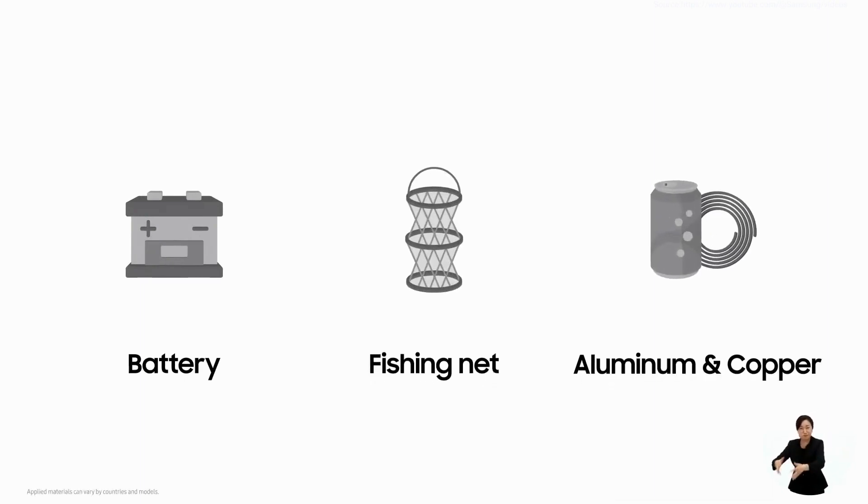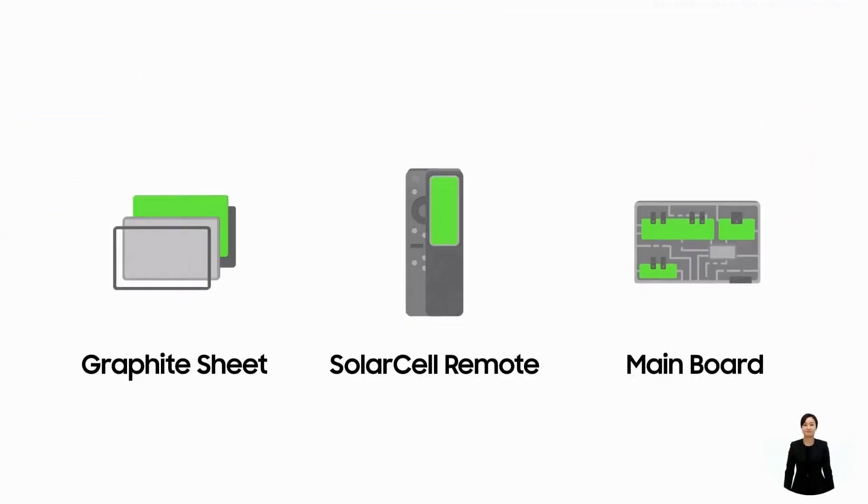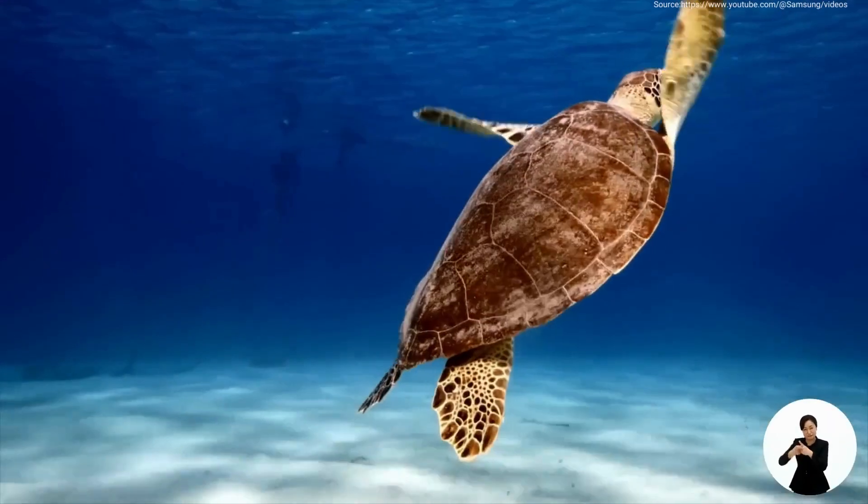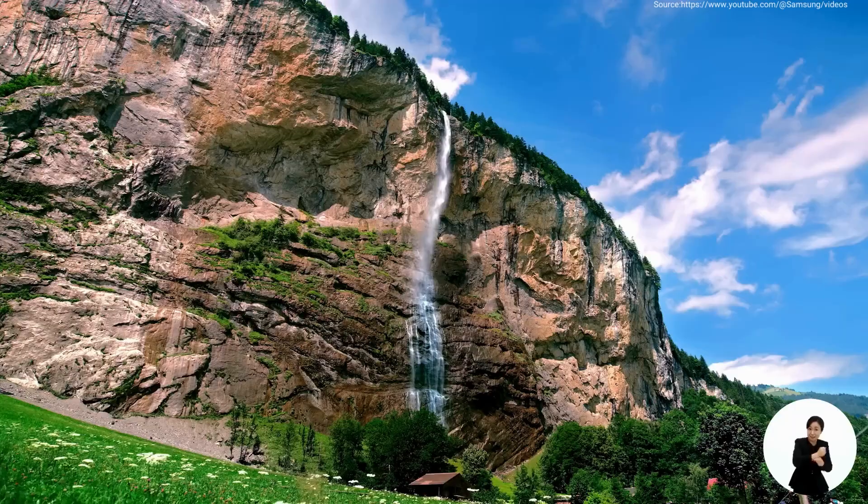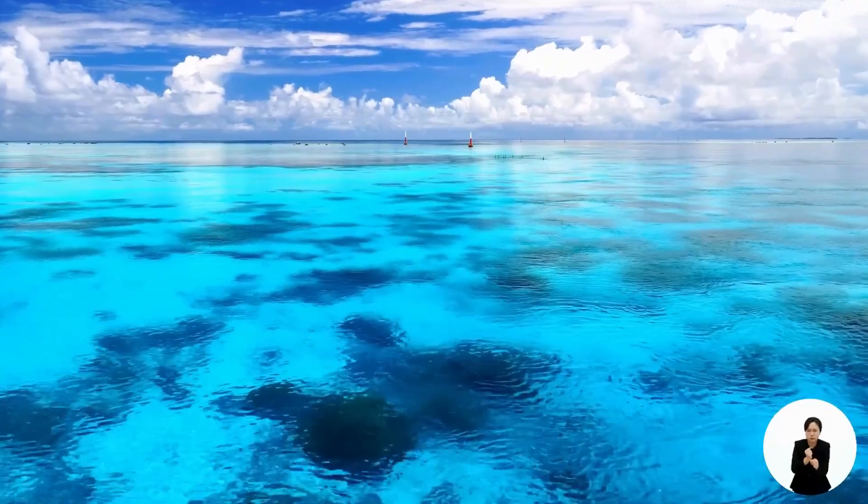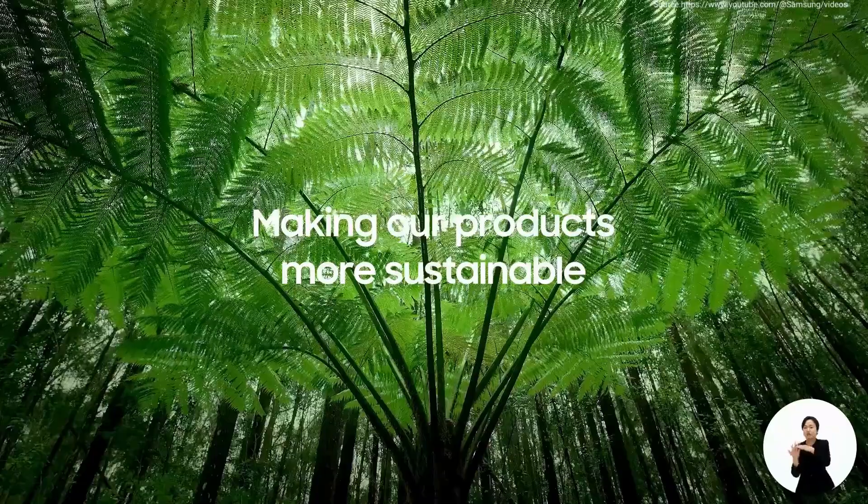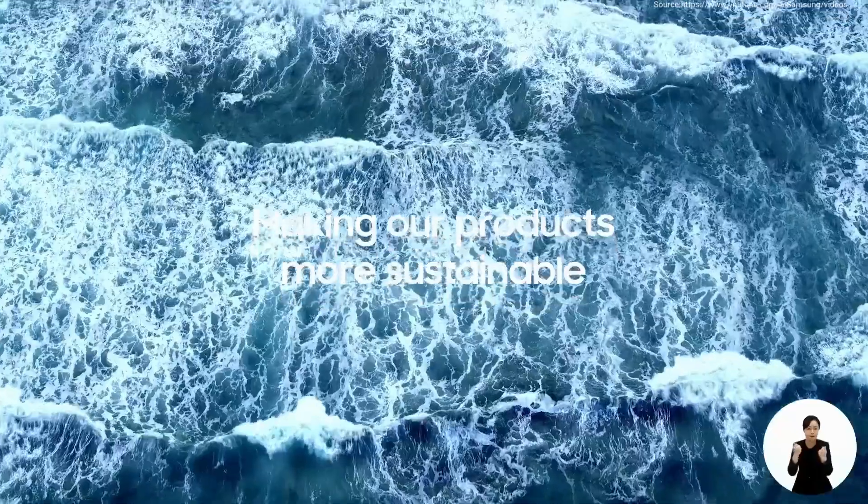We're also upcycling. Parts of our TVs are now made from discarded secondary batteries, discarded fishing nets, and waste metals. By collecting and upcycling waste into usable materials, we're directly contributing to the reduction of waste in our landfills and oceans, and making our products more sustainable with less environmental impact.